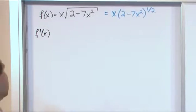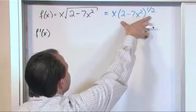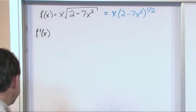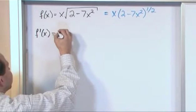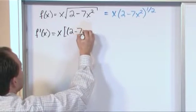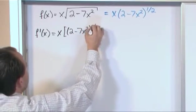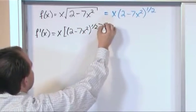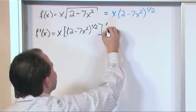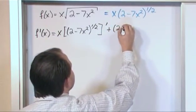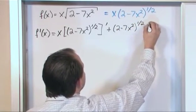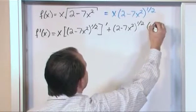So what's the product rule? It's the first function times the derivative of the second function plus the second function times the derivative of the first function. So let's go and do that. It's the first function times the derivative of the second function. So we'll have 2 minus 7x squared raised to the 1 half. First times the derivative of the second function, that's what this means, plus the second function, 2 minus 7x squared raised to the 1 half times the derivative of the first function over here.